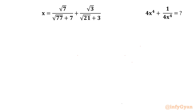Welcome to Infigyan friends. In this video we are going to take up another challenging question from Math Olympiads. x is equal to square root 7 over square root 77 plus 7, plus square root 3 over square root 21 plus 3. Then we have to evaluate 4x to the power 4 plus 1 over 4x to the power 4.